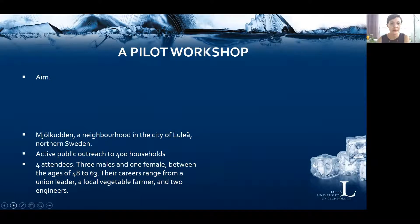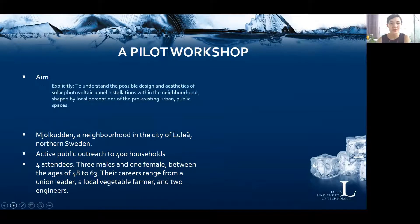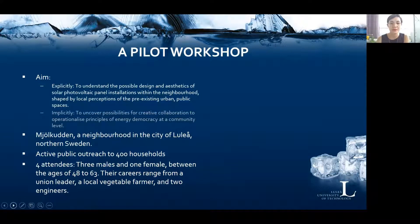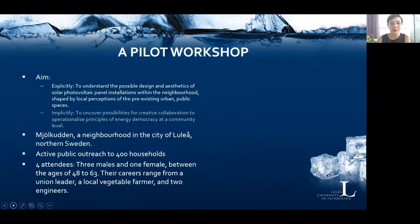The workshop that we conducted is dual in its aim. Explicitly, it is to understand the possible design and aesthetics of solar-voltaic panel installations within the neighbourhood shaped by local perceptions of pre-existing urban public spaces, and implicitly to uncover possibilities for creative collaboration to operationalize principles of energy democracy at a community level. It was conducted in the fall of 2019 in a neighbourhood called Mjölkodden in the city of Luleå in northern Sweden. There was active public outreach to 400 households; however, only four attendees arrived — three males, one female, between the ages of 48 to 63 — with careers ranging from a union leader, a local vegetable farmer, and two engineers.